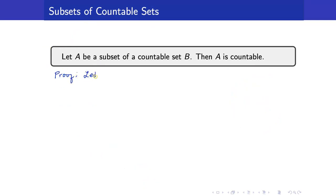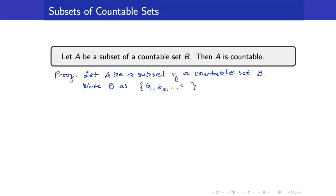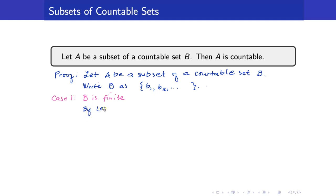Let us now prove this formally. We start with the premise: B is countable, and we write B as {B_1, B_2, ...}. Since a countable set is either finite or infinite, we have a proof by cases. For case 1, B is finite. Then from lecture 44, any subset of a finite set is already finite, and so A is already countable.